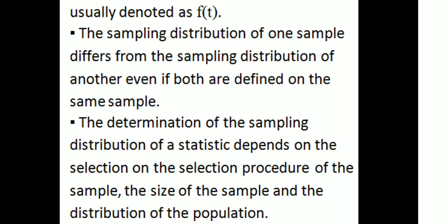The sampling distribution of one sample statistic differs from the sampling distribution of another, even if both are defined on the same sample. The determination of the sampling distribution of the statistic depends on the selection procedure of the sample.